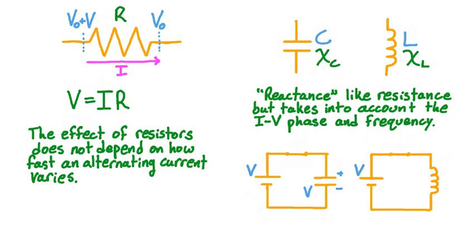The opposite effect occurs in a direct current circuit with an inductor. When the switch is closed, the EMF from the cell initially acts to create a magnetic field inside the inductor. As the strength of this magnetic field grows, more and more of the EMF drives current through the inductor instead of being devoted to establishing the magnetic field. So when the switch is first closed, the inductor acts like an open circuit, but after a long time when the magnetic field has reached full strength, the inductor acts like a conducting wire.